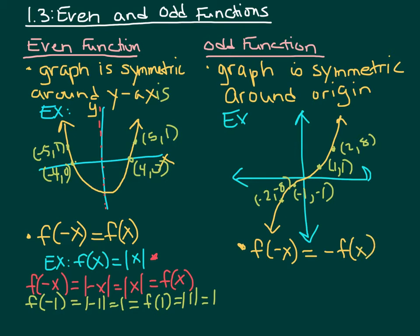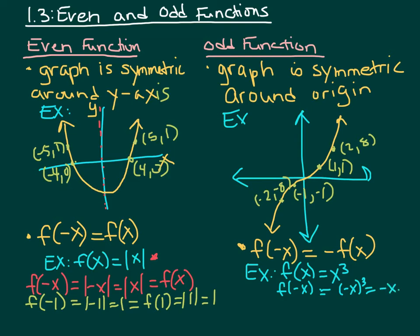Let's go through that using an example — f of x equals x to the third. If I substitute in a negative number, x to the third means negative x times negative x times negative x. I have three negatives, and a negative times a negative times a negative must give a negative. So f of negative x equals negative x to the third, which is the same as negative f of x. That confirms x to the third is an odd function.